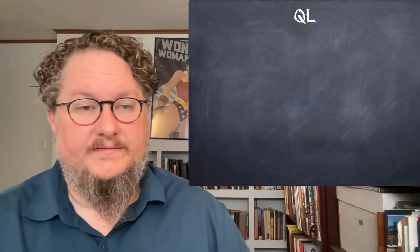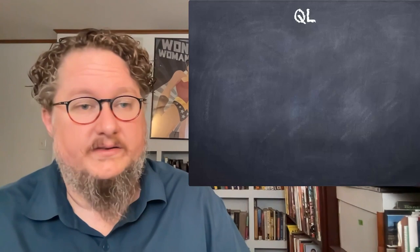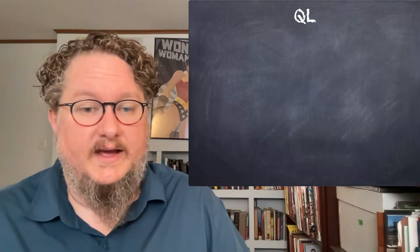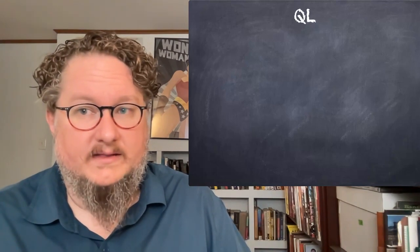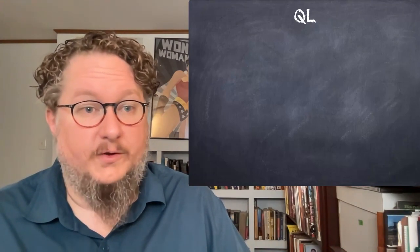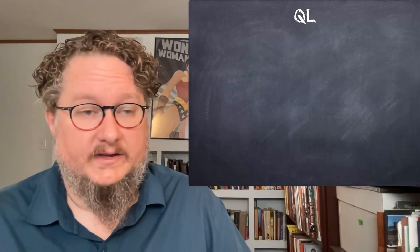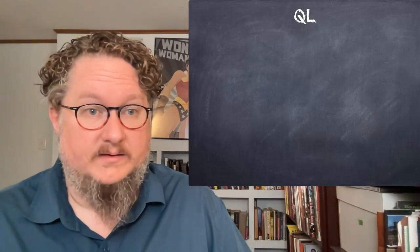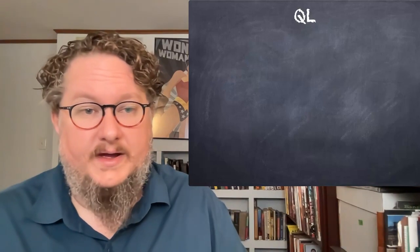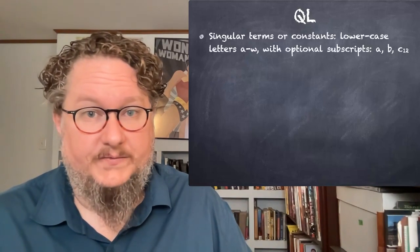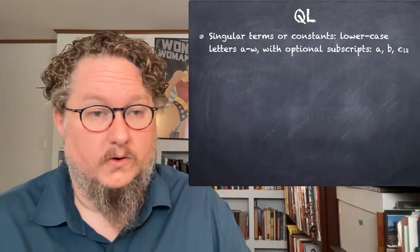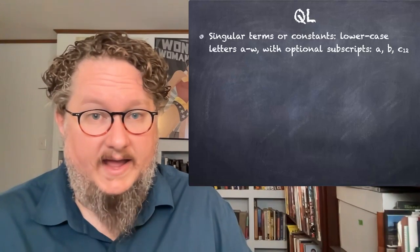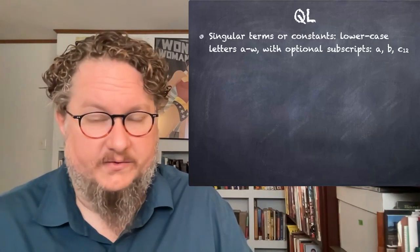So let's talk about the features of QL and its components. Everything that's part of SL — all of those connectives — are also part of QL: conjunction, disjunction, conditional, negation. They're all already part of QL. Here are the other parts of QL. There are singular terms, or what we call constants, that we represent with the lowercase letters A through W, optionally with subscripts.